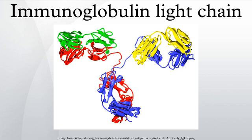In other animals, the immunoglobulin light chain genes in tetrapods can be classified into three distinct groups: kappa, lambda, and sigma.